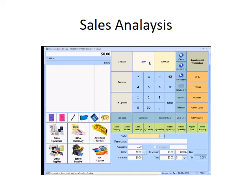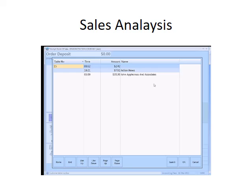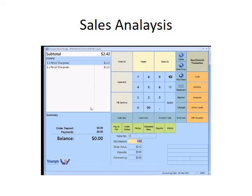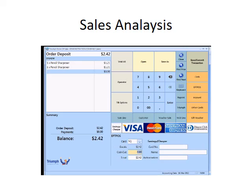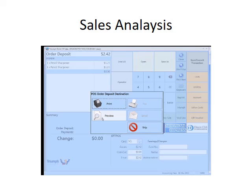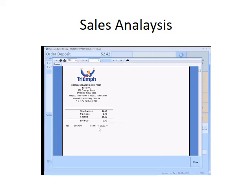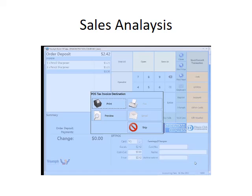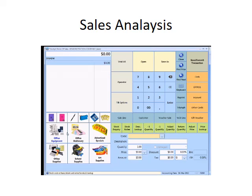The order sits there - the client can pull it up, open things up, and add items to it. When they come to pay, you can pull up the order for table 15, see what they've had, pay out the balance, and process it through. So ordering has a bit of flexibility: you can have it as a back order situation where you're bringing stock in for a customer, or you can treat it like a table where they're adding to it through the day.